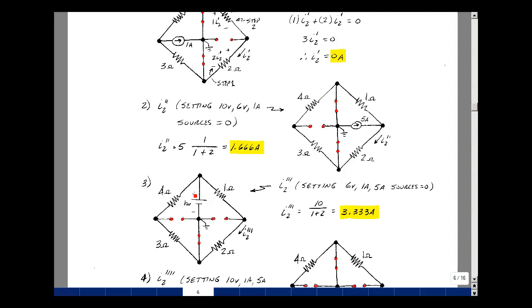Let's consider the next source, which is our 10-volt source, and set the two current sources equal to zero and the 6-volt source equal to zero. That would be a short and two opens. And again, I want to find the current in this resistance. That was our mesh current. But this will be due to our third source.